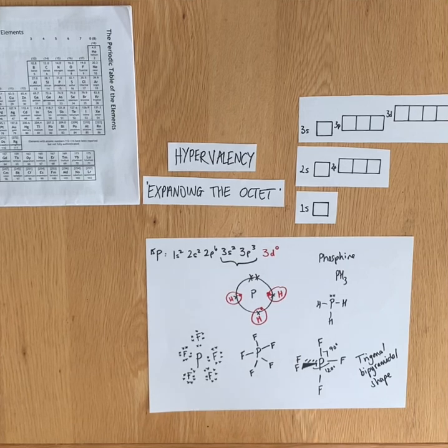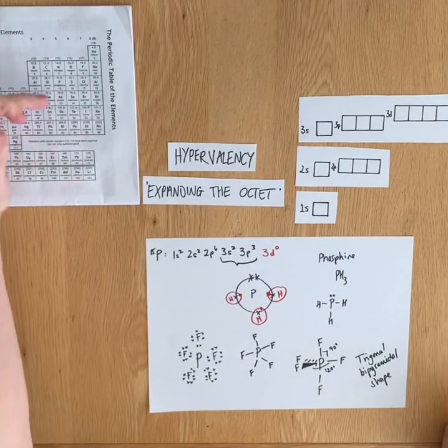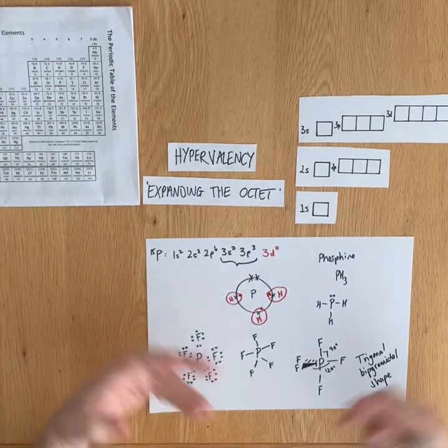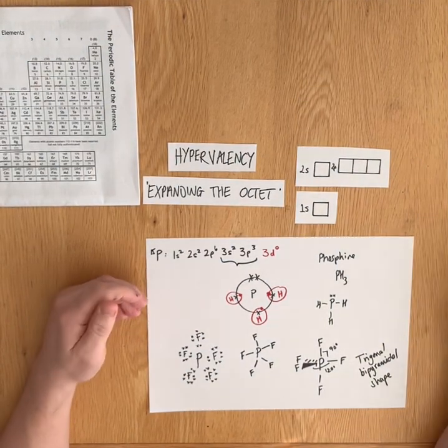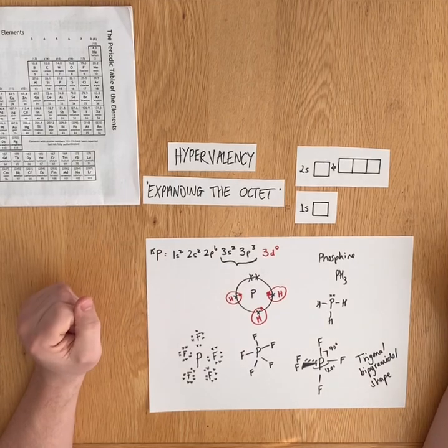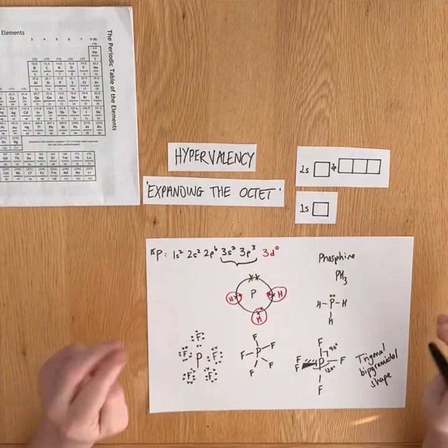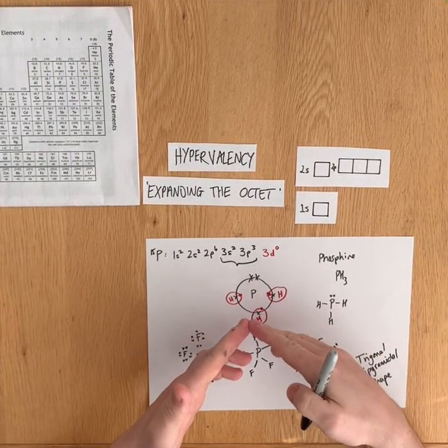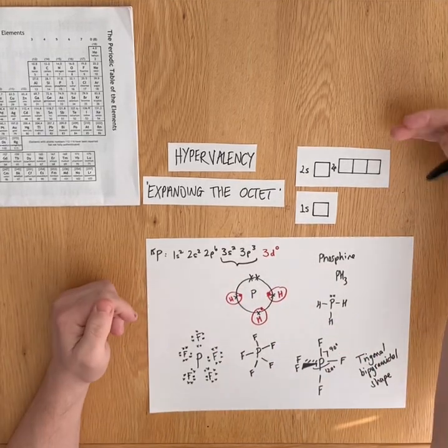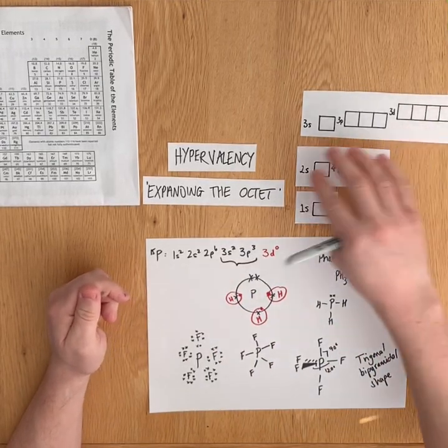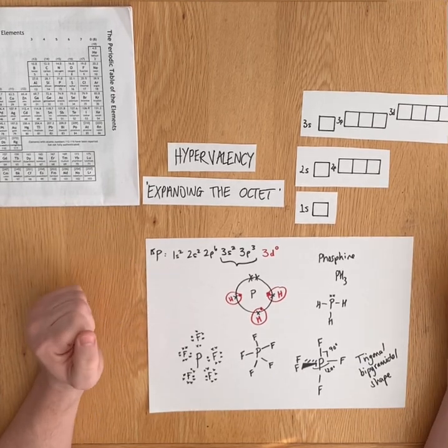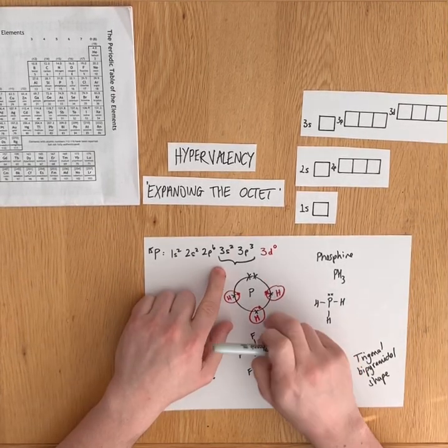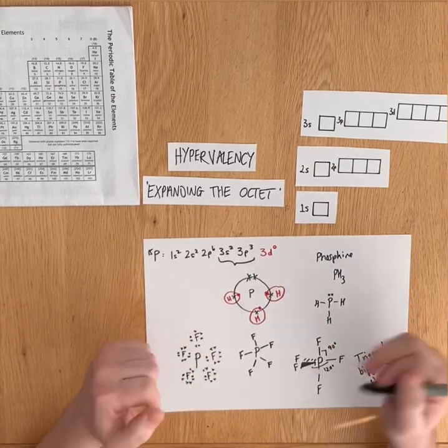Using this, let's just recap why nitrogen is not able to expand its octet in the same way. Nitrogen doesn't have an empty 2d orbital. In order for nitrogen to expand its octet, it wouldn't be expanding its outer shell; it would have to move into a third shell, in which case that is significantly unfavorable. Because phosphorus has an empty 3d subshell, it can be forced with highly reactive elements to use those orbitals.